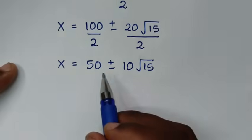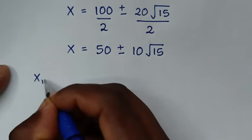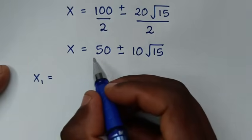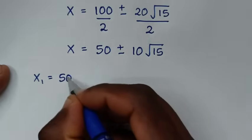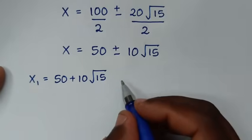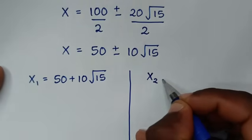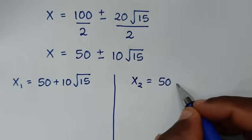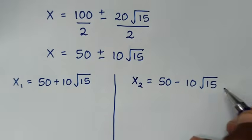We therefore have two values of x: the first value, x1, is equal to 50 plus 10 square root of 15, and the second value, x2, is equal to 50 minus 10 square root of 15.